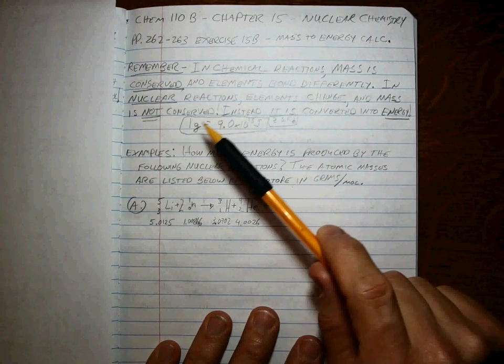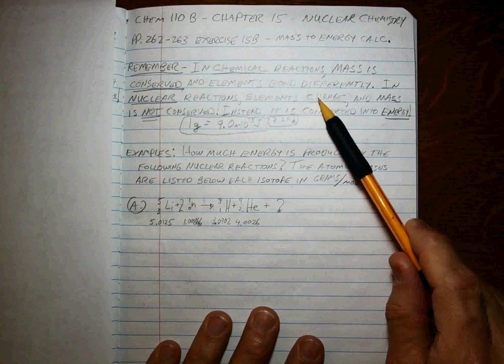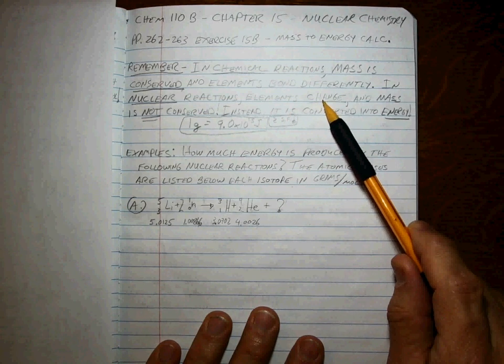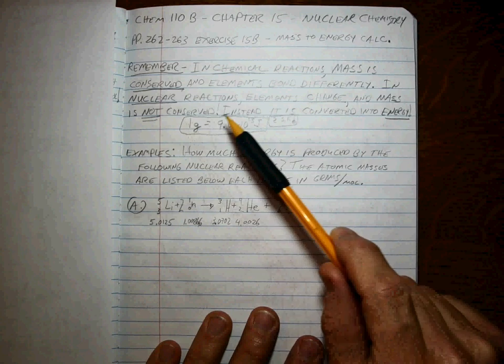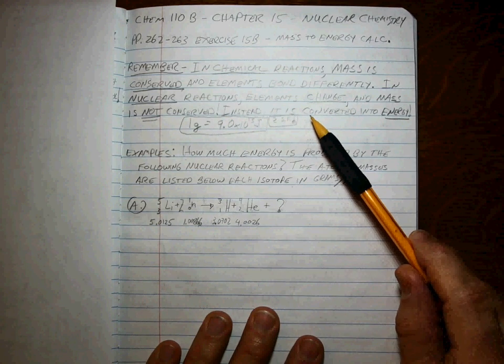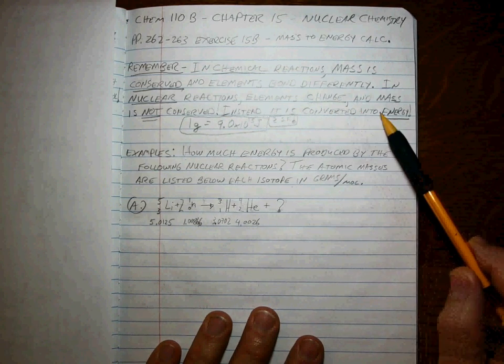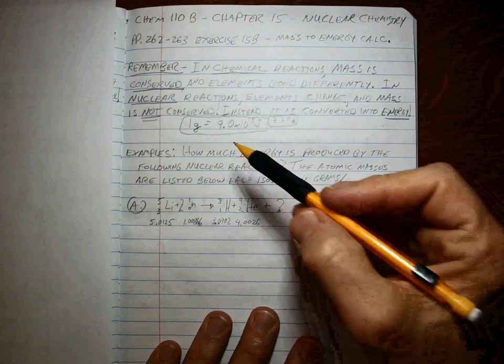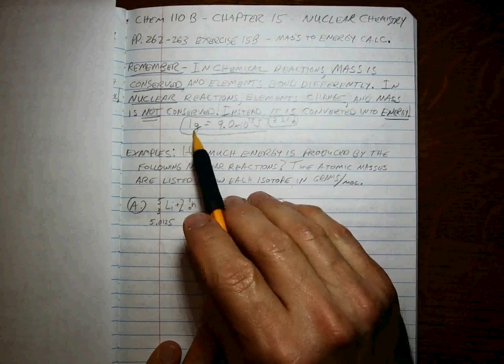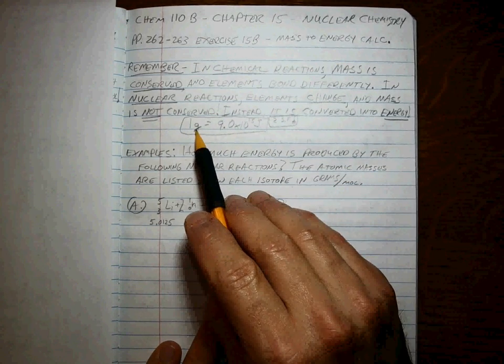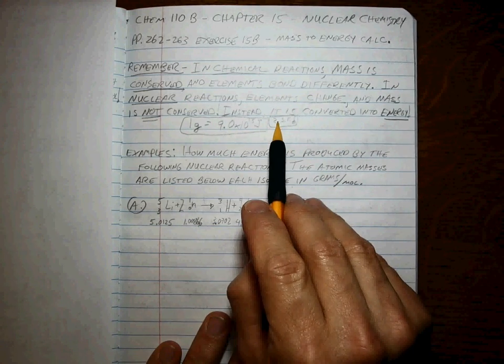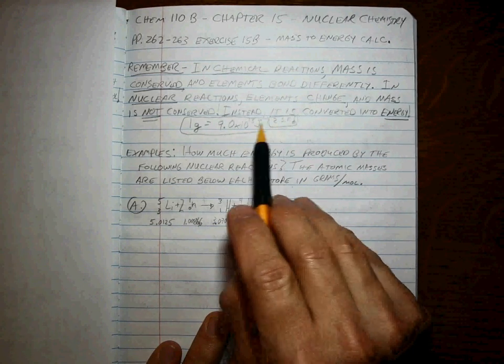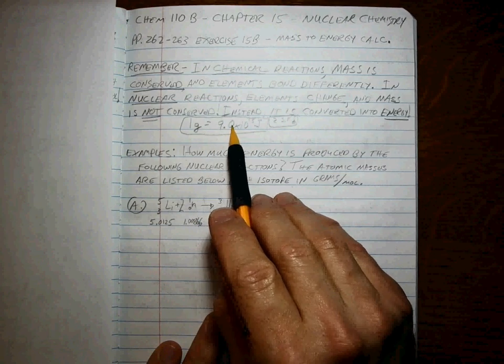But in nuclear reactions, things are very different. Elements change completely and mass is not conserved. Instead, some of that mass gets converted into energy. And that energy to mass conversion is given, and it's given as two sig figs.